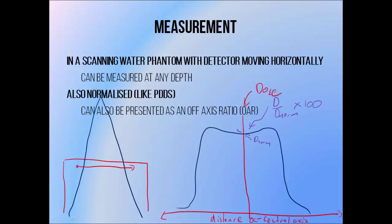So the dose on the central beam axis will be 100%, and the dose at a point which is half that at the central axis will be 50%. Points on a beam profile can also be expressed as an off-axis ratio, or OAR, which are often used in monitoring unit calculations. Calculating an off-axis ratio is very similar to normalizing a profile to the point on the central axis, in that we divide the dose at each point by the dose at the normalization point, except this time we don't multiply it by 100.